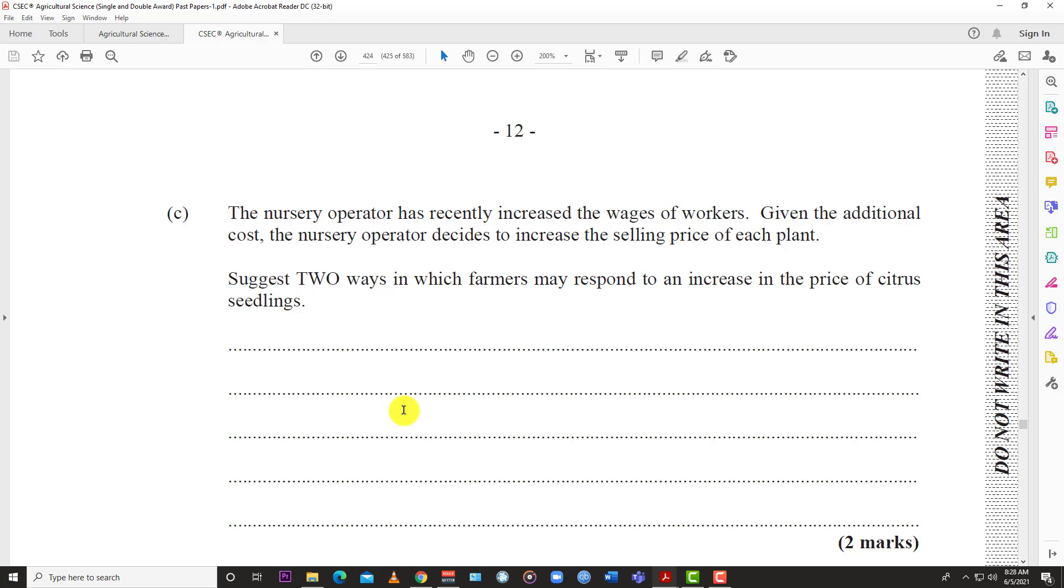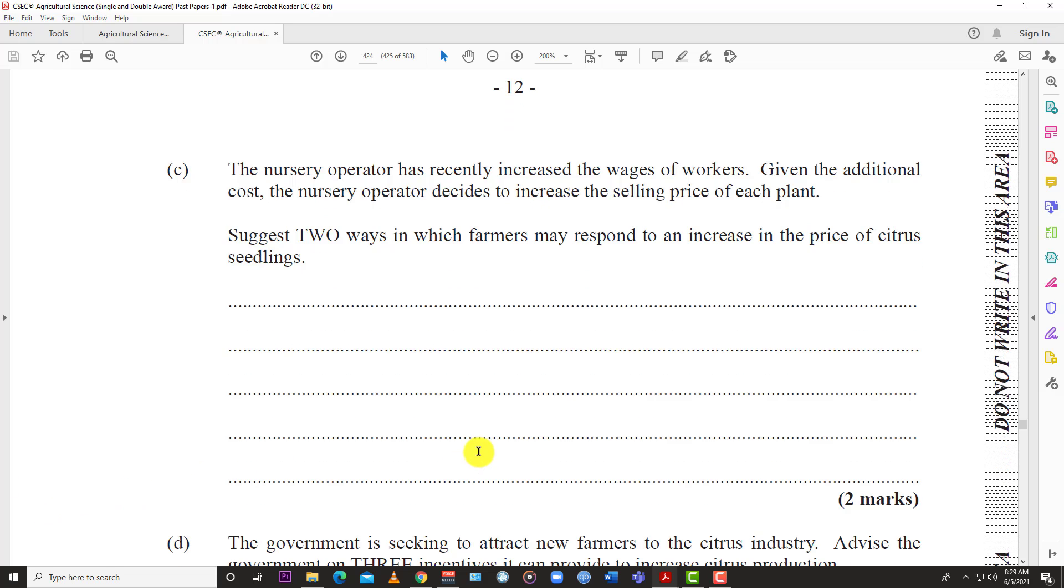They can sell their produce more expensive, they can raise the price of their produce. So the farmer can either plant something else or go somewhere else. You can plant something else, increase your price, or simply demand less. That's three things right there. You can demand less plants from the nursery, you can increase the price of your plants to offset the increase in costs, or you can just plant something else. Two marks, boom, done.